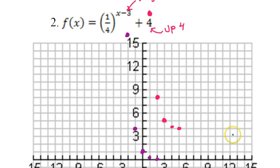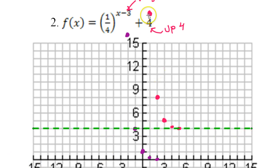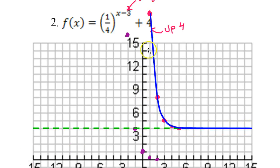Let's do the asymptote first — it will be at positive 4. Show it as a dotted line. Now draw a smooth curve through your 5 points, making sure your curve goes all the way to the edge of the graph and all the way up. Your final graph should look something like this.